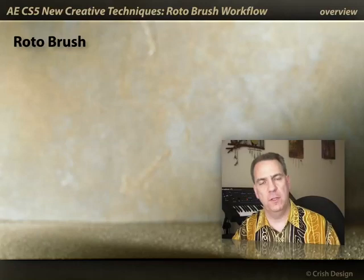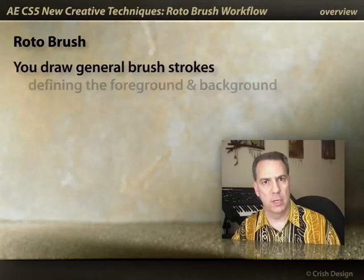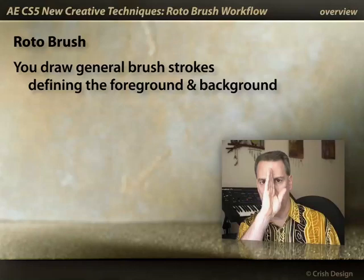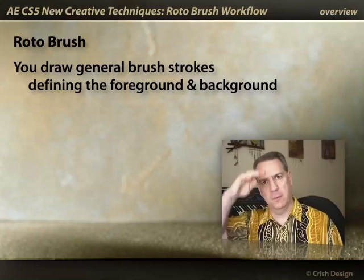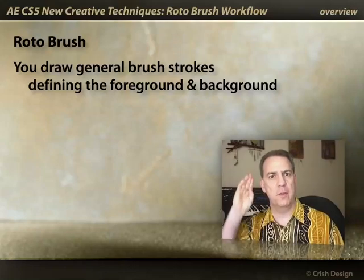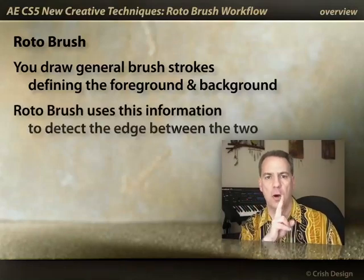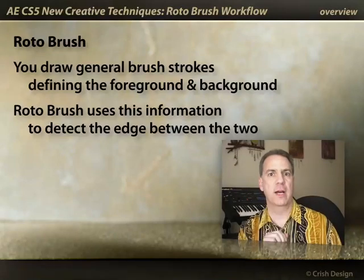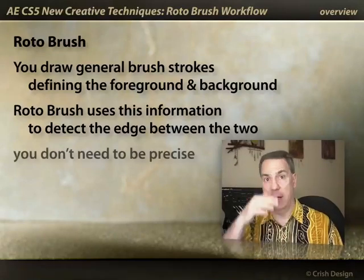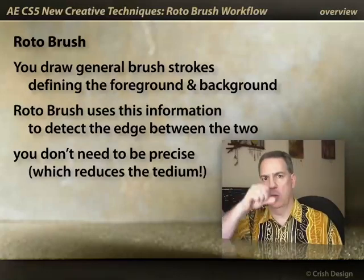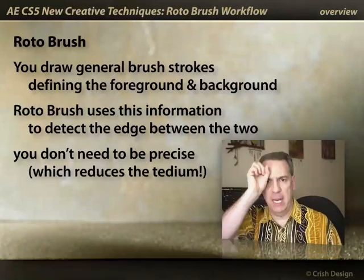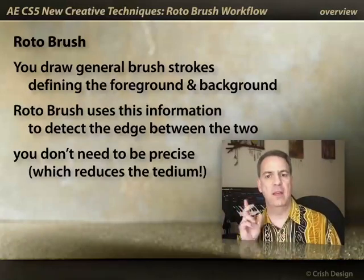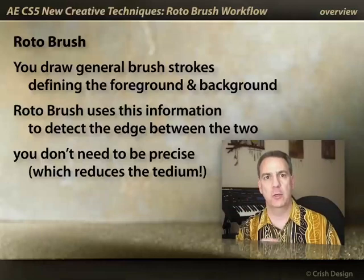The Rotobrush is probably the most important new feature in After Effects CS5. With Rotobrush, you draw just general brushstrokes saying here's the foreground, here's the background, and Rotobrush will automatically detect the edge between that foreground and background. You don't have to carefully draw a mask edge, you don't have to carefully paint along the edge — it will find the difference between foreground and background for you.